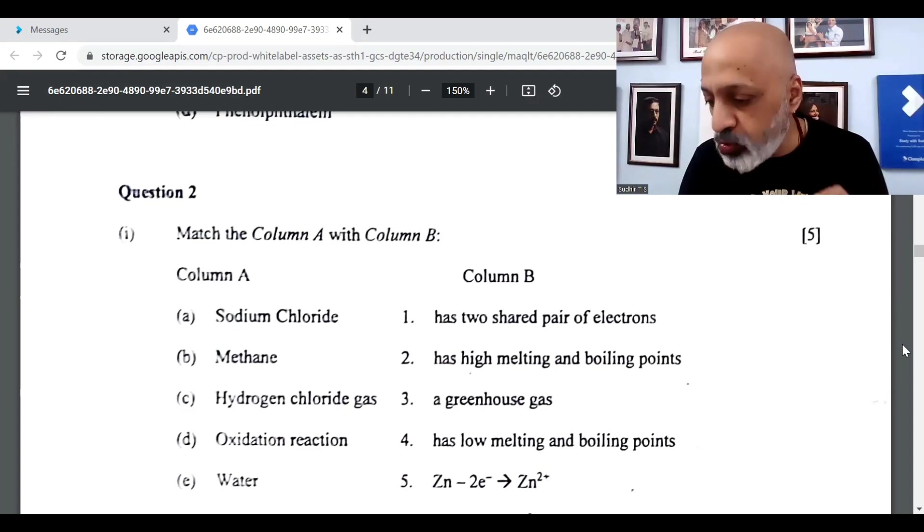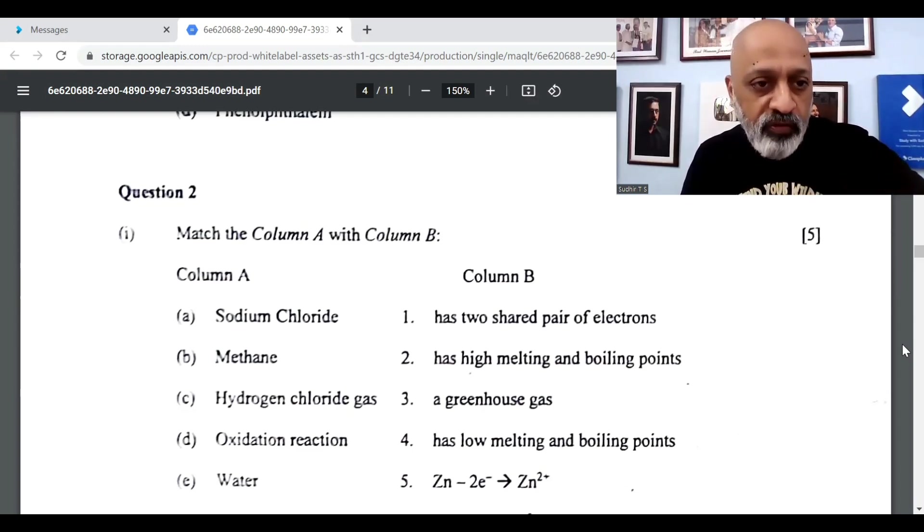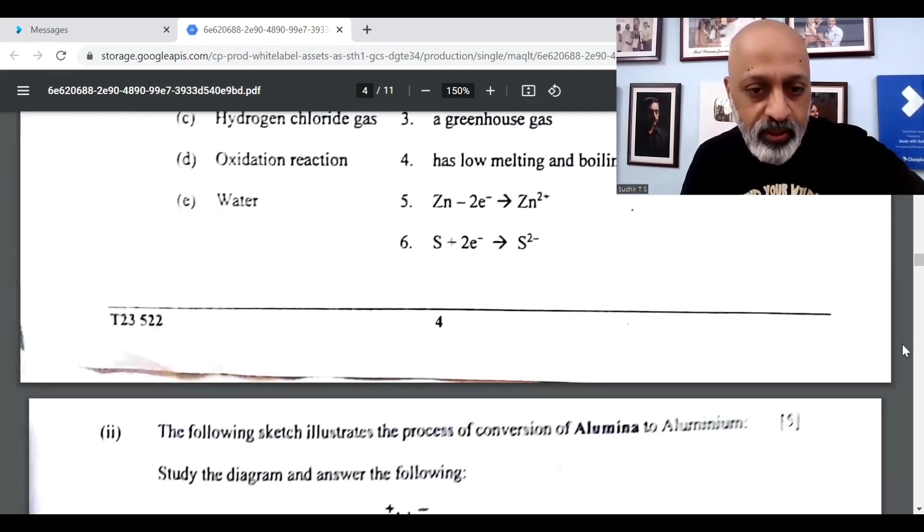C matches to 4, has low melting and boiling points. D matches to 5. And E, water matches to 1, has two shared pair of electrons. That is as far as match the following of question 2 part 1 is concerned.